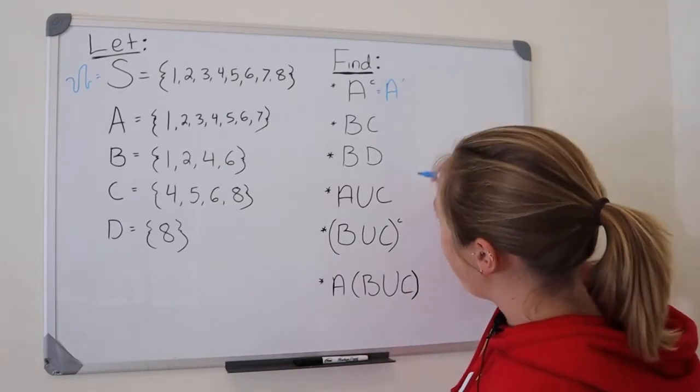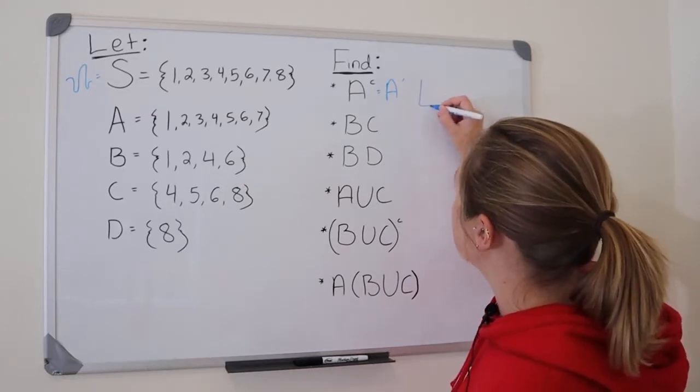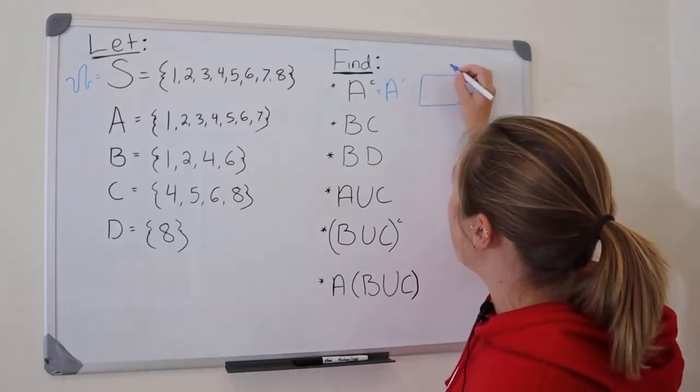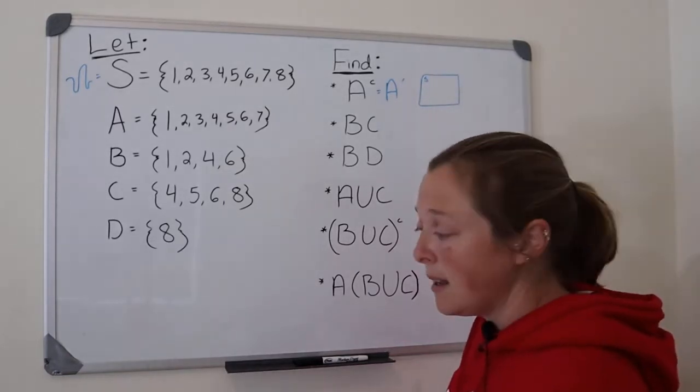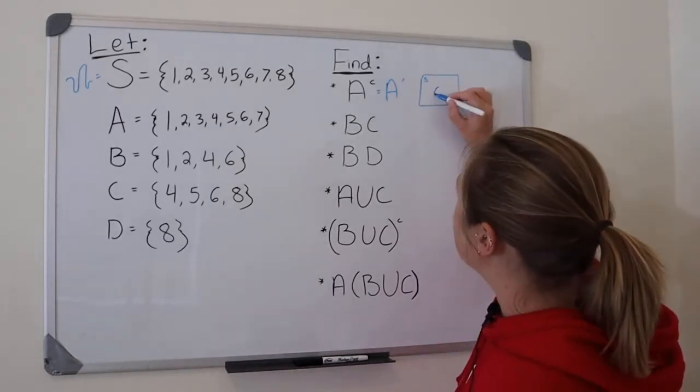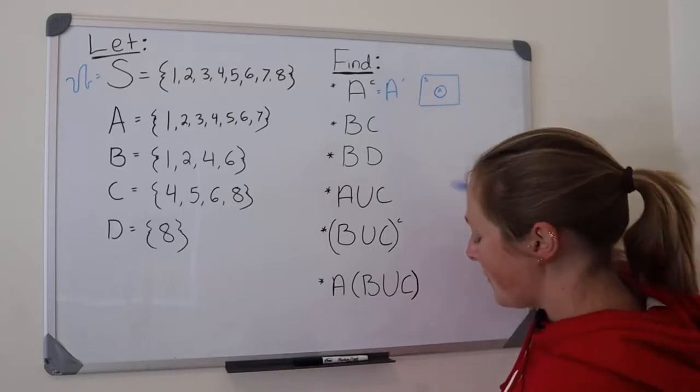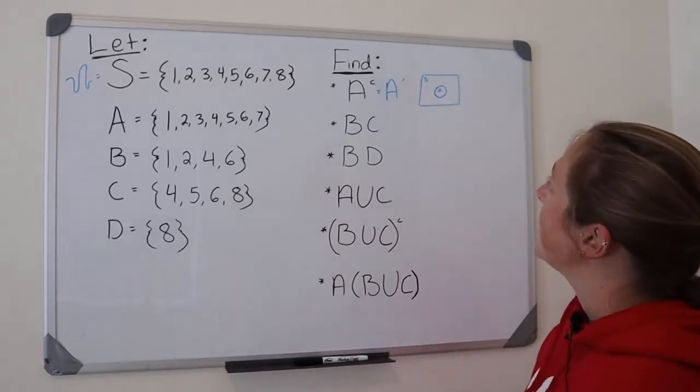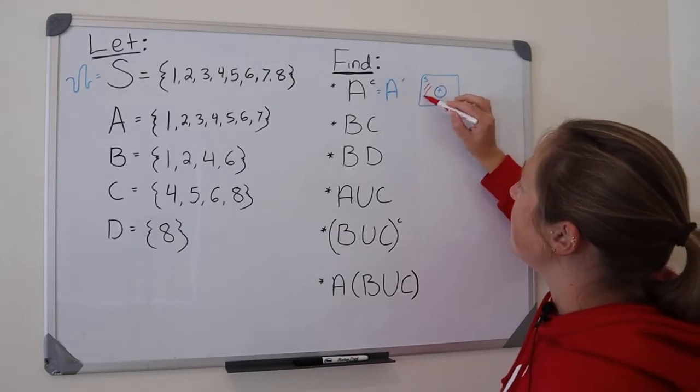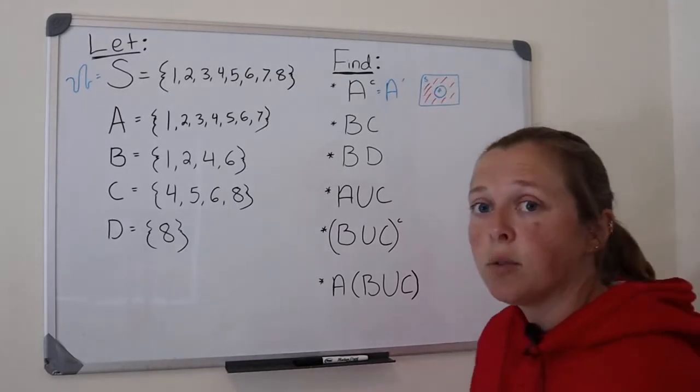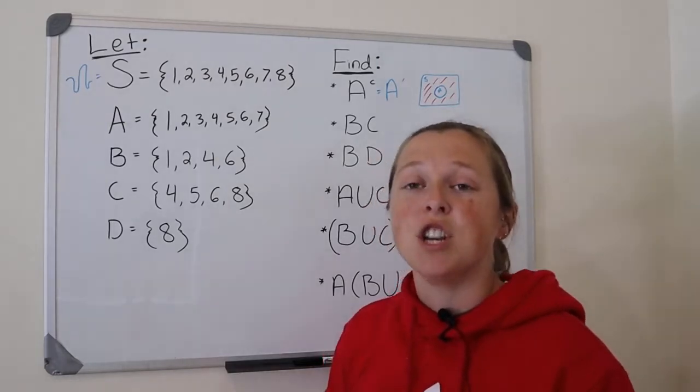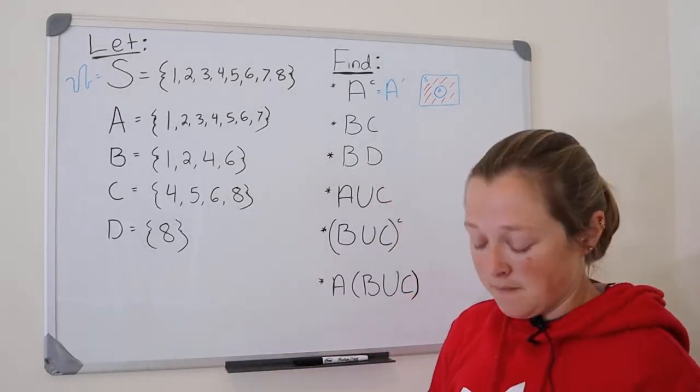And what does that stand for? If I were to draw this out, if this box here is my sample space S, and suppose A is this circle here, A complement is everything that is in the sample space, but it's not in A. So when you hear complement, you think the word not, not in A.